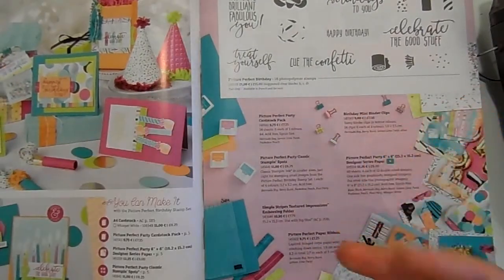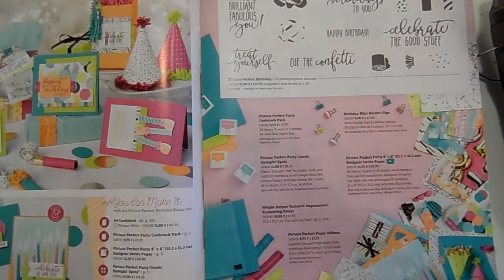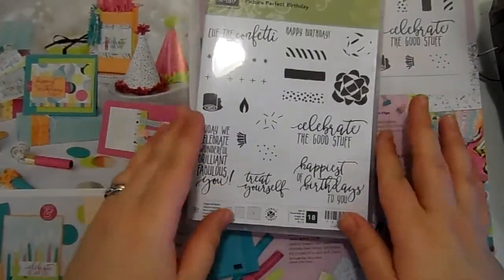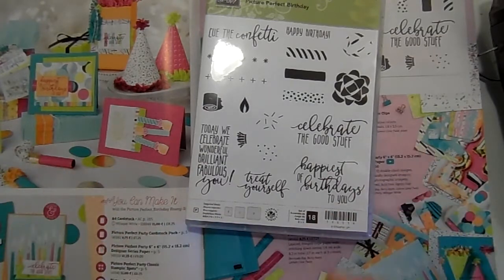So, birthday card club lasts for four months: January, February, March and April. It features the Picture Perfect Party suite and each month you get about £25 worth of Stampin' Up! products plus eight fabulous cards for you to put together. Complete card kit, the lot.